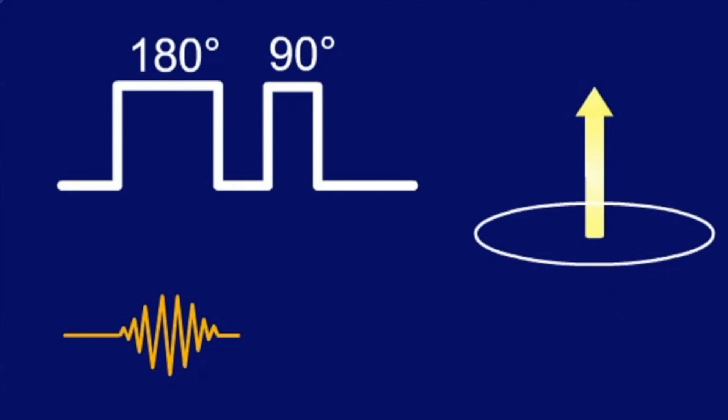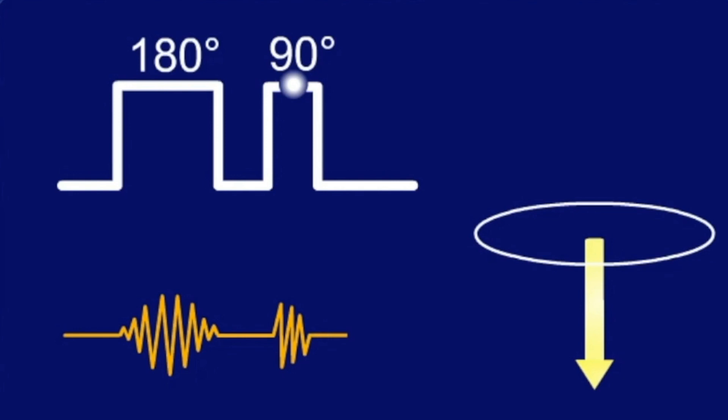For this we use the 90-degree pulse. So we first use a 180-degree pulse which turns the longitudinal magnetization in the opposite direction, which is then followed by a 90-degree pulse.